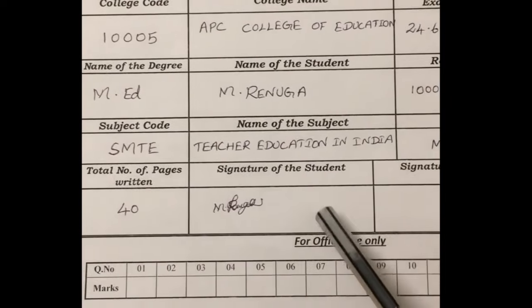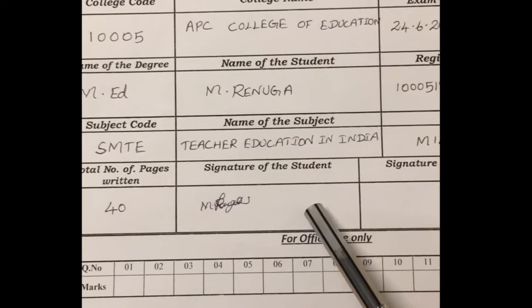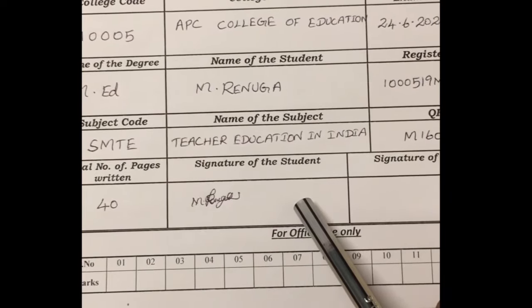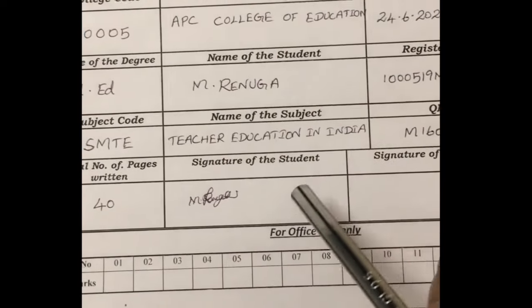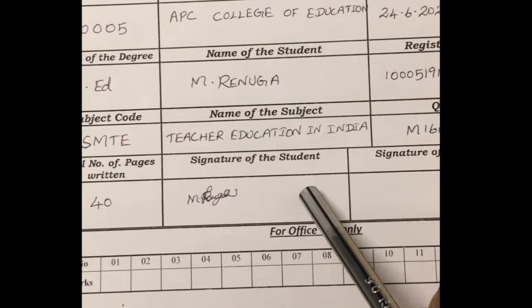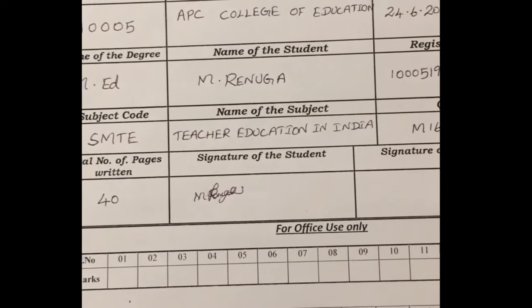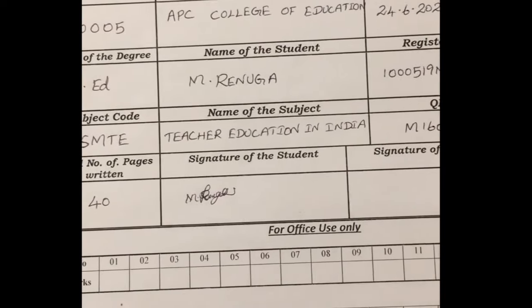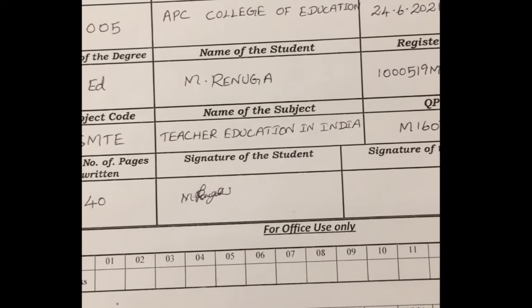After completing your examination, you have to write the total number of pages written, then put your signature. You have to fill this front sheet only up to your signature. The rest is for office use only.